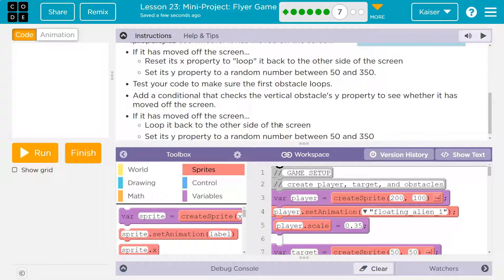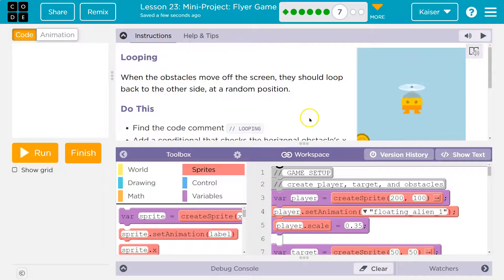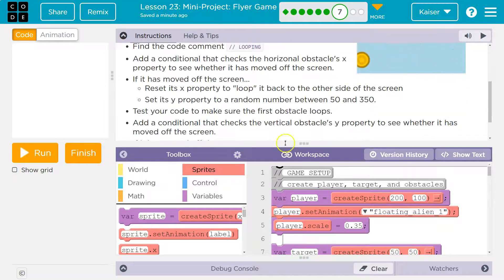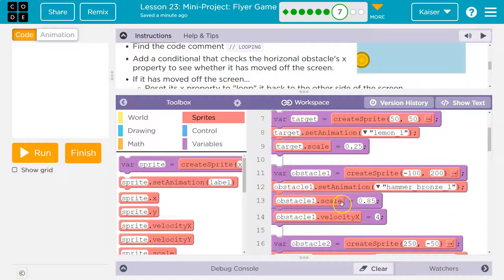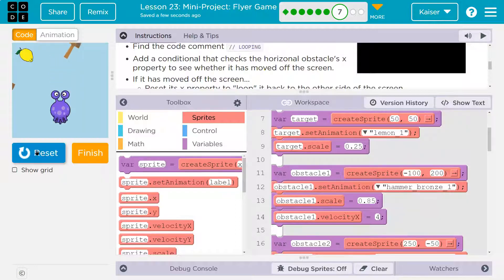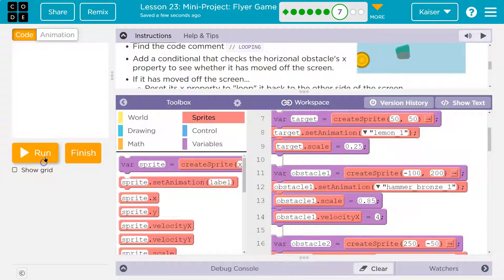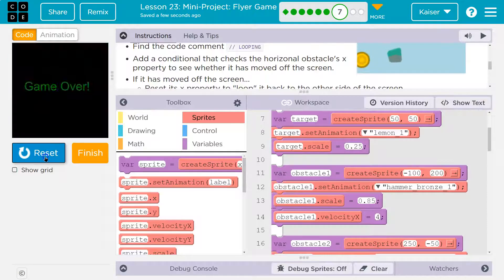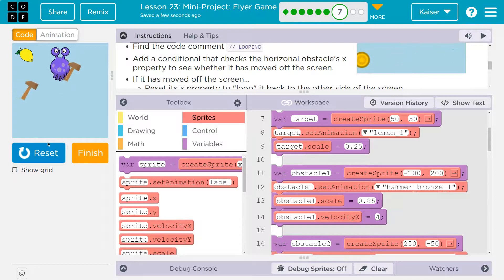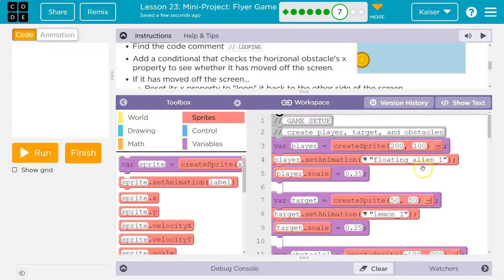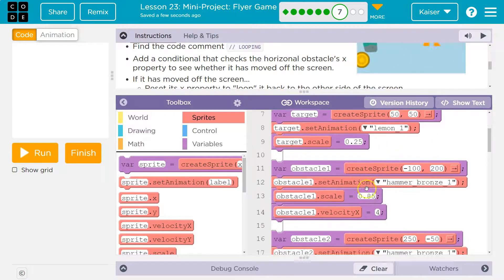Test your code to make sure it loops. Add a conditional that checks the vertical obstacle's y value. Okay, this is all making sense now. First though, I need to make sure my obstacles are moving, so I need to do a velocity. We have that velocity right now. I need to make sure they're looping. It's just that I die so fast you can't tell, but they're moving.